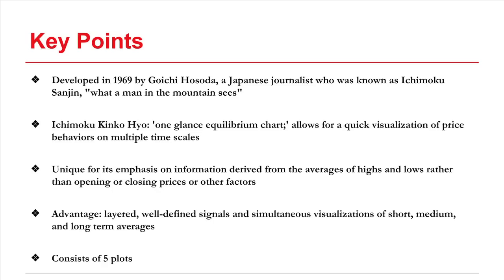Ichimoku was developed in 1969 by a Japanese journalist named Goichi Hasoda. Ichimoku Sanjin was his nickname, which means 'what a man in the mountain sees,' and that's similar to the indicator, which tries to have a sort of overhead view. The full name Ichimoku Kinko Haya translates to 'one glance equilibrium chart,' and it's designed as a simple way to visualize price behaviors on multiple timescales simultaneously. The indicator is somewhat unique for its emphasis on averages of highs and lows rather than opening or closing prices or other factors.